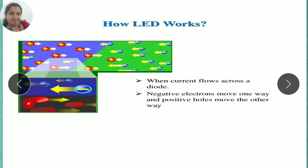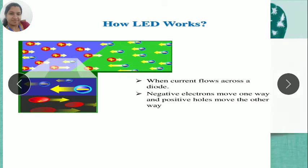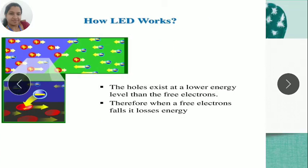Holes are in the valence energy level, while electrons are located in the higher energy level. The holes occupy the lower energy level and electrons occupy the higher energy level, creating a difference in energy between them.